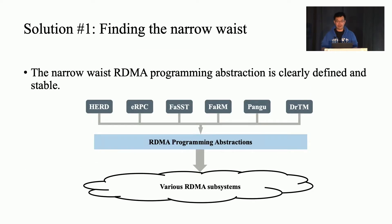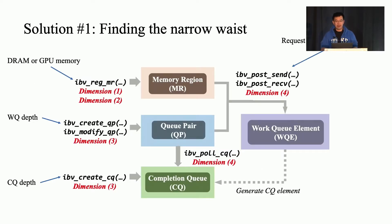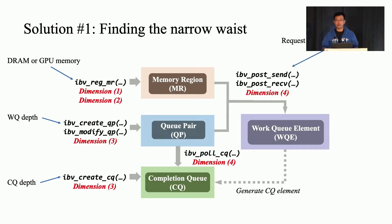Fortunately, we have several observations that can help us address these challenges. The first is that we can leverage the narrow waist of RDMA applications. Though RDMA applications are various and RDMA subsystems are complicated, the narrow waist RDMA programming abstraction — for example, the verbs abstraction — is clearly defined and stable. All application workloads are basically combinations of different verbs operations. Therefore, we analyze the verbs abstraction and extract several dimensions and factors to build the search space — for example, the memory type the application uses, such as GPU memory or DRAM, the transport type such as reliable connection or unreliable datagram, and the request patterns the application sends.